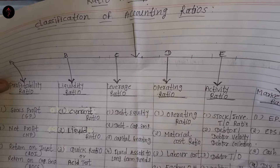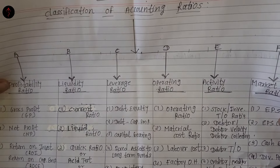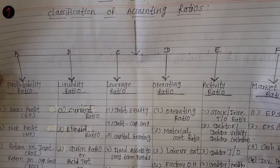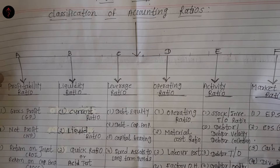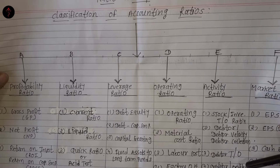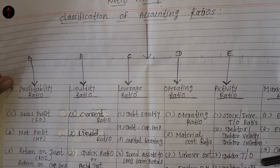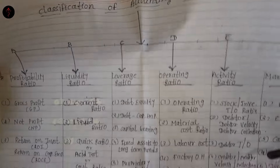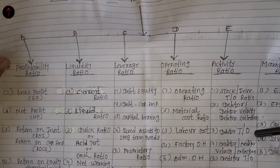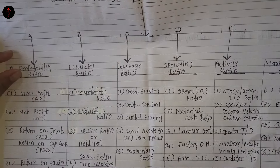Basically, ratios in your chapter are classified into 6 categories. I have written all the 6 categories and the ratios included in those particular categories.